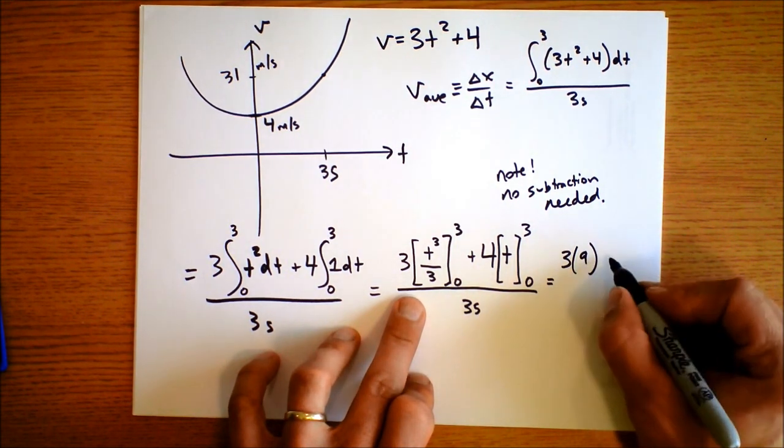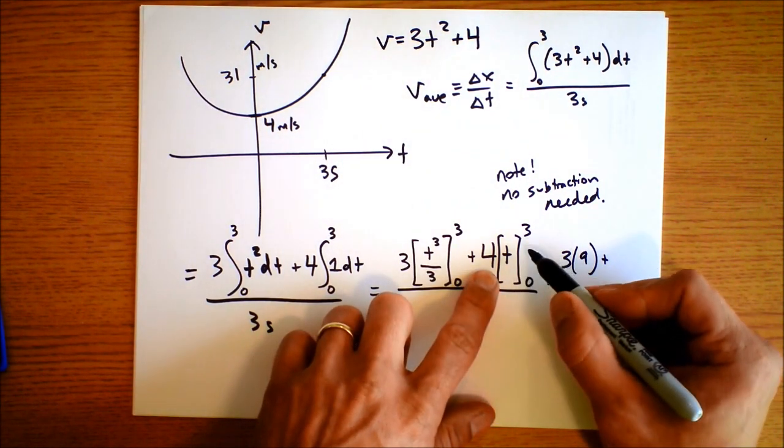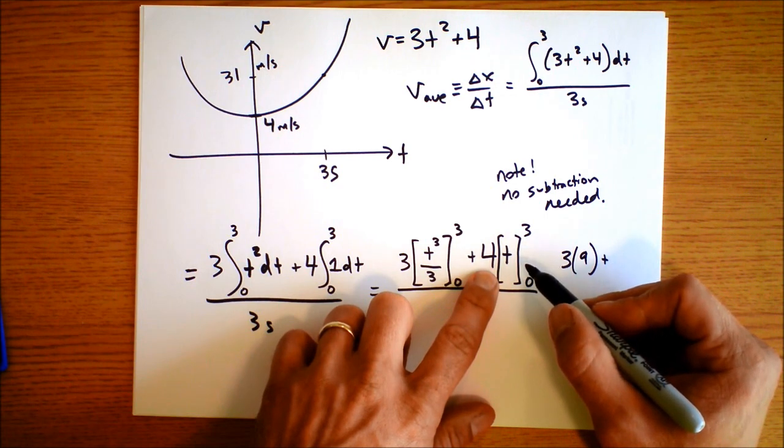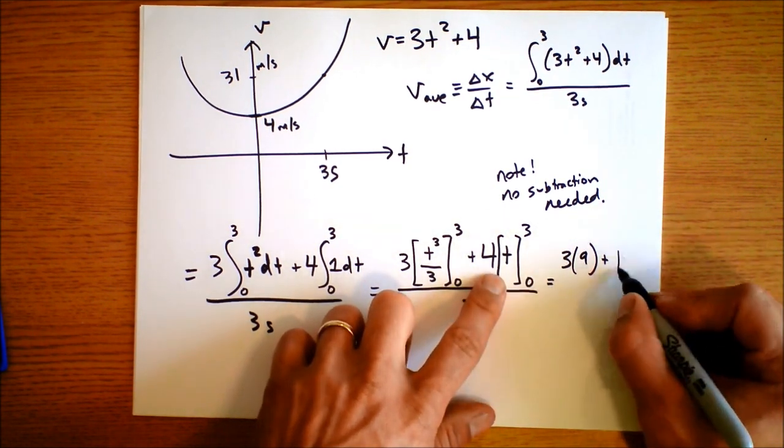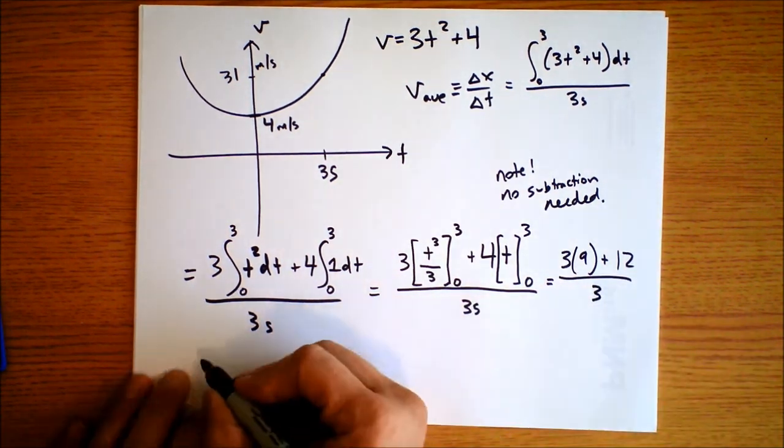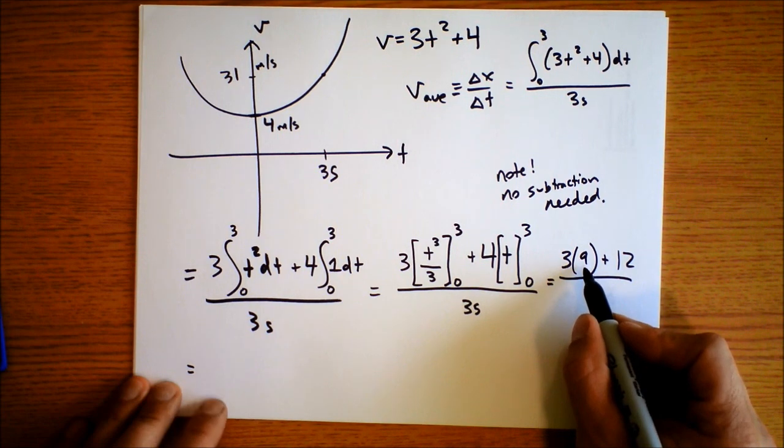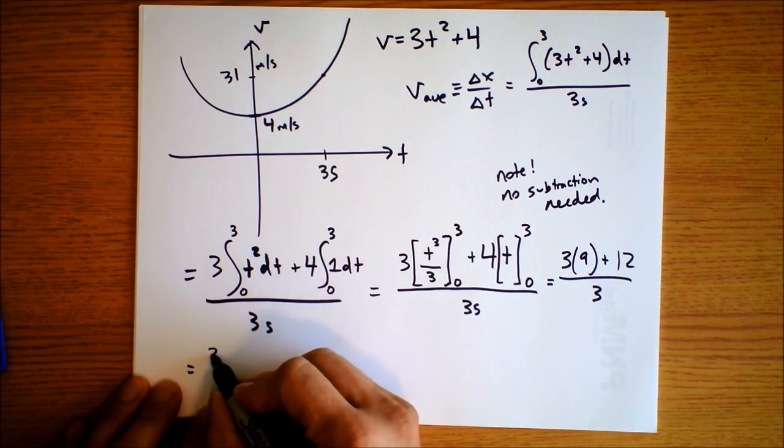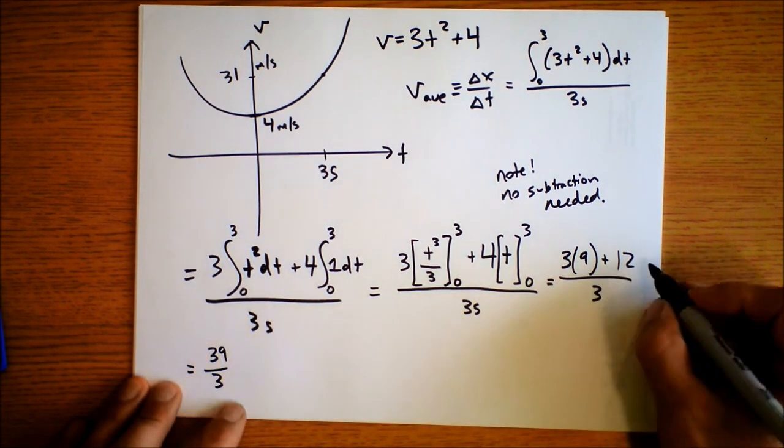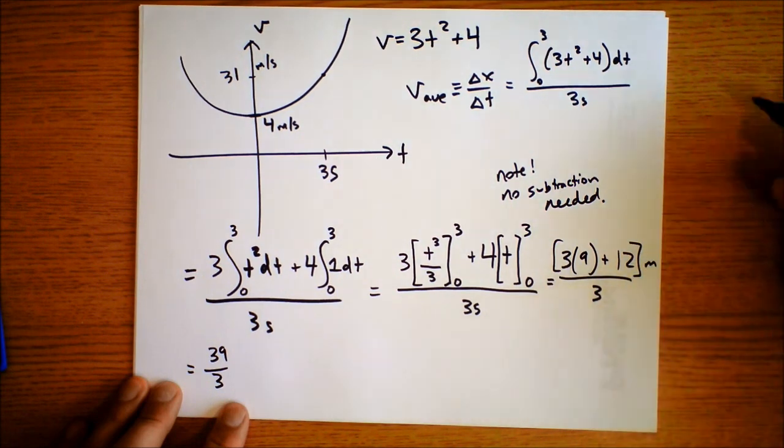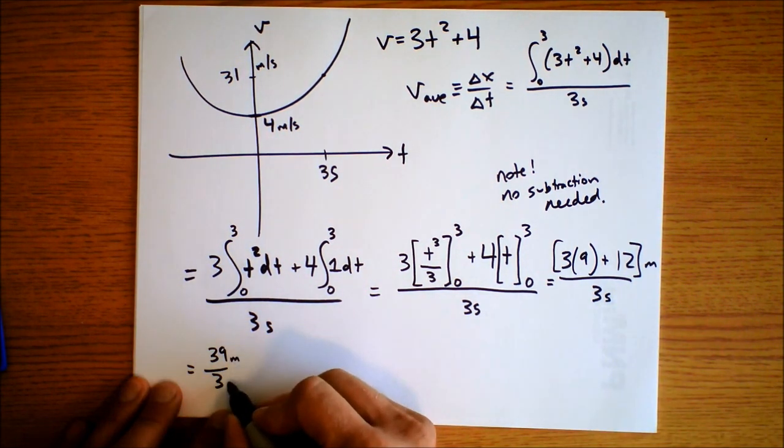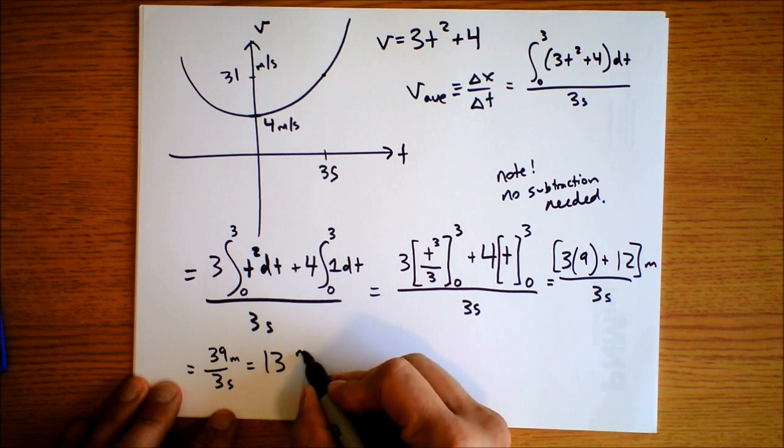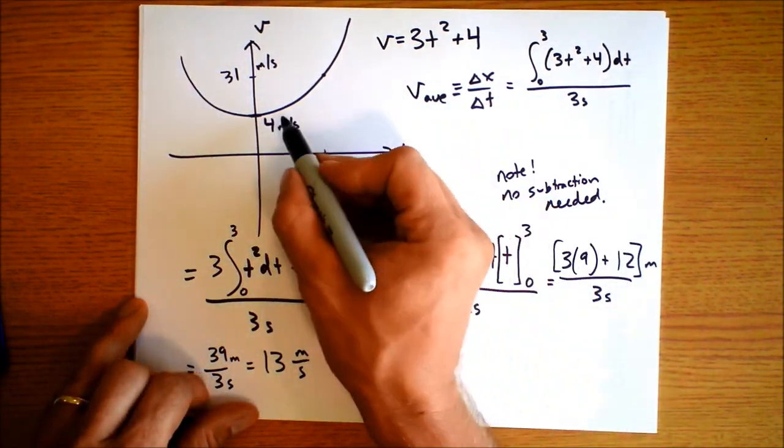So we're going to do 3. Now 3 to the third is 27, but we're dividing by 3. So this is essentially going to be 9. 3 times 9. And then I'm going to add to it this result, which is 4 times 3. That's 12. So we divide that by 3. And that means we've got, let's see, this is 27 plus 12. 27 plus 12 is 39 divided by 3. Remember, this has units of meters up top because it is the displacement. And in the denominator, we've got units of seconds. So this is 39 meters divided by 3 seconds. That's 13 meters per second.